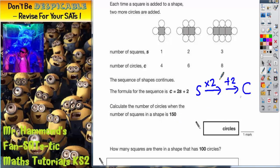Now this way of writing the formula will be very useful here, because all we have to do is we know that the number of squares is 150. Here's the number of squares.